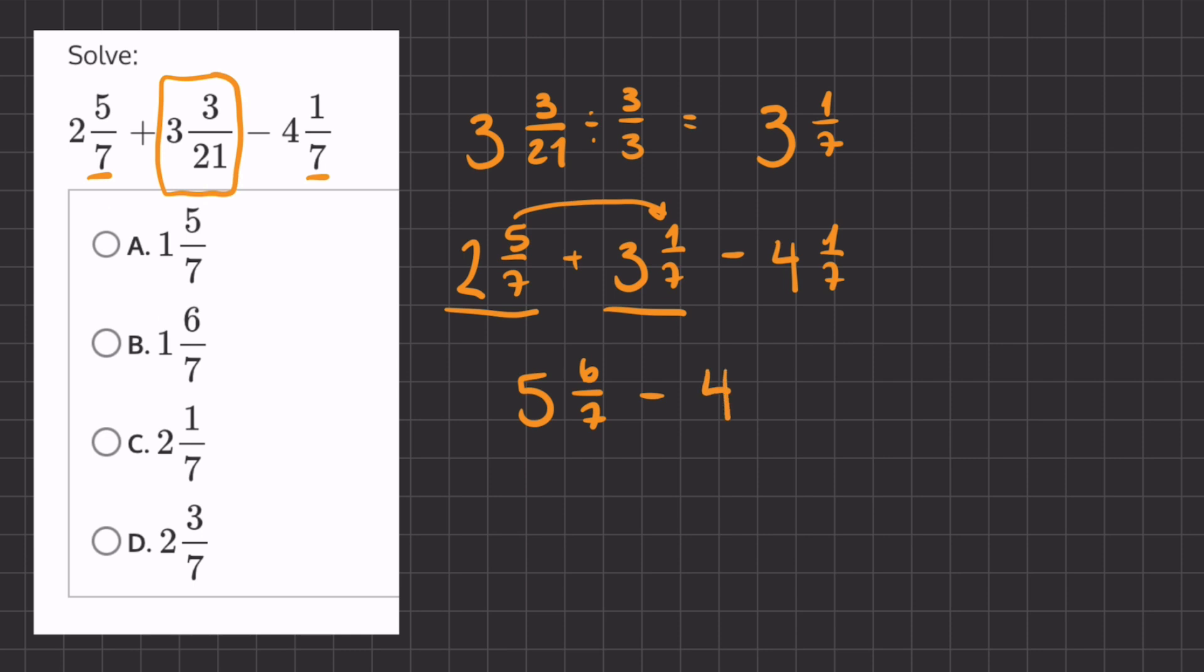Now let's subtract 4 and 1 over 7 from 5 and 6 over 7. So let's subtract our whole numbers first, and we'll get 1, 5 minus 4.